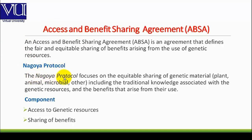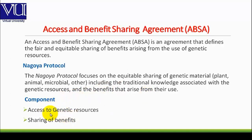The Nagoya Protocol has two main components. The first component is access to genetic resources. How can we access genetic resources?